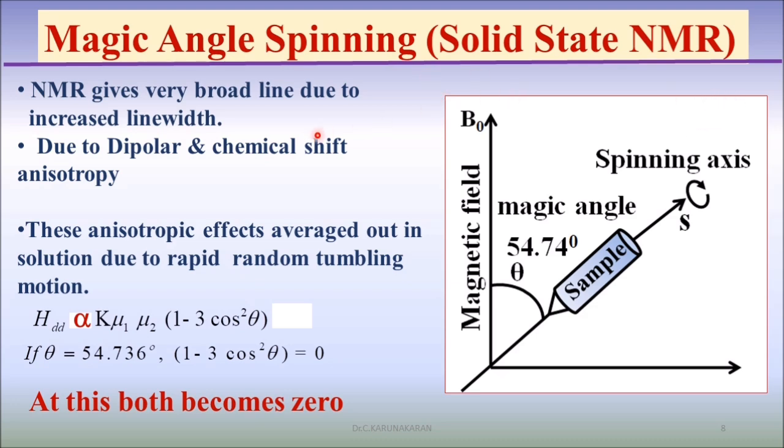In solid-state, the compound gives broad lines in NMR spectrum because of increased line width due to spin lattice relaxation, dipolar interactions, chemical shift, and anisotropy.